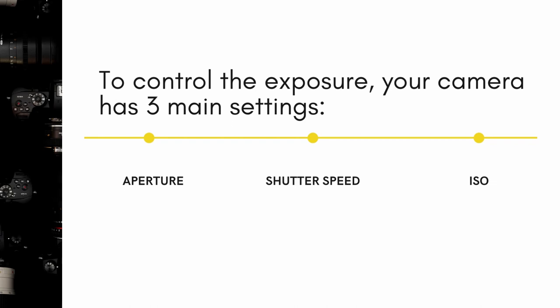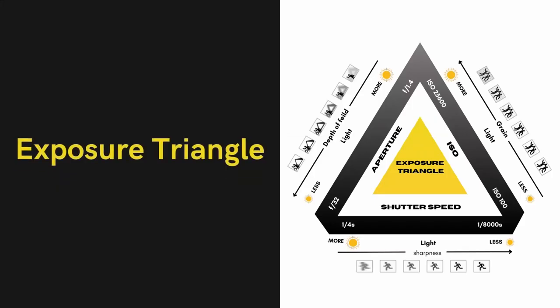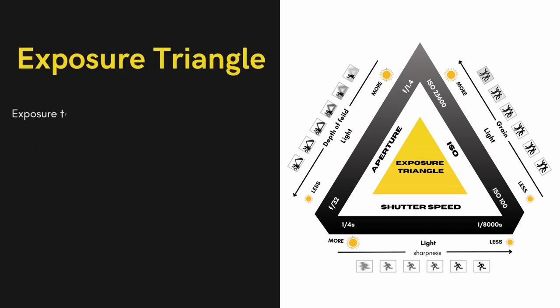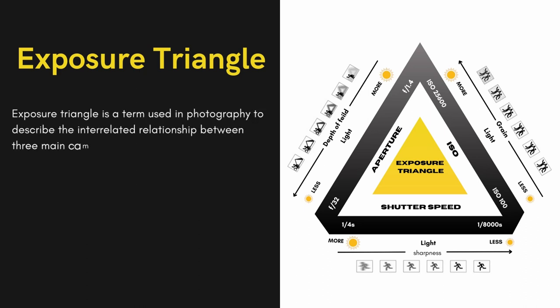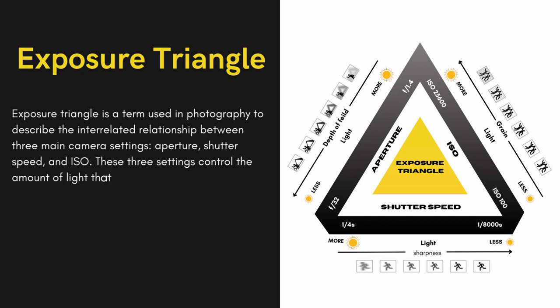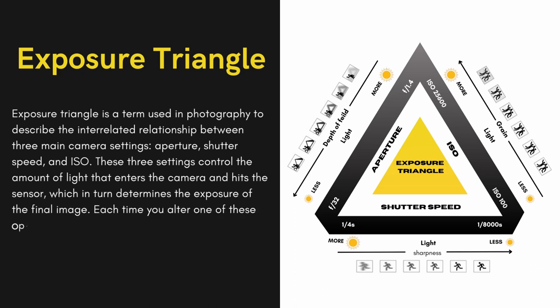Understanding the exposure triangle is crucial to getting the right exposure for your photos. The exposure triangle is a term used in photography to describe the interrelated relationship between three main camera settings: aperture, shutter speed, and ISO. These three settings control the amount of light that enters the camera and hits the sensor, which in turn determines the exposure of the final image. Each time you alter one of these options, the other two change as well. Let's have an in-depth understanding of each of these three main settings.